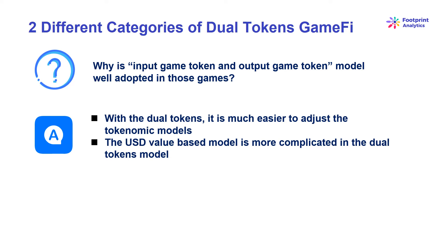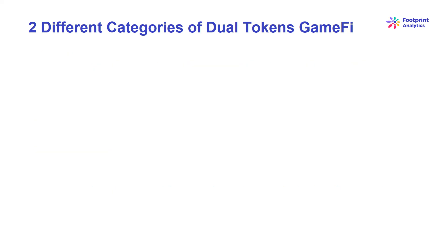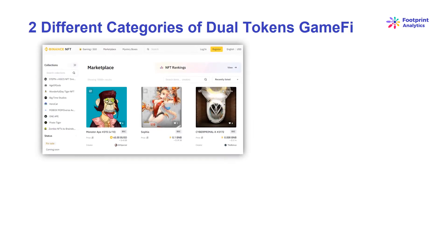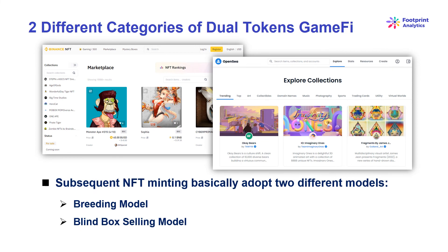In this video, we provide an analytical approach to divide different categories of dual tokens game fi. After the sale of Genesis NFTs, what approach does the project owner use to increase the number of NFTs in the market to meet demand from new players? Most game fi projects will sell Genesis NFTs on the official platform or partner platforms such as Binance NFT or OpenSea to accumulate initial players. They then have several mechanisms to mint further NFTs while fueling token consumption, and basically adopt the following two different models.